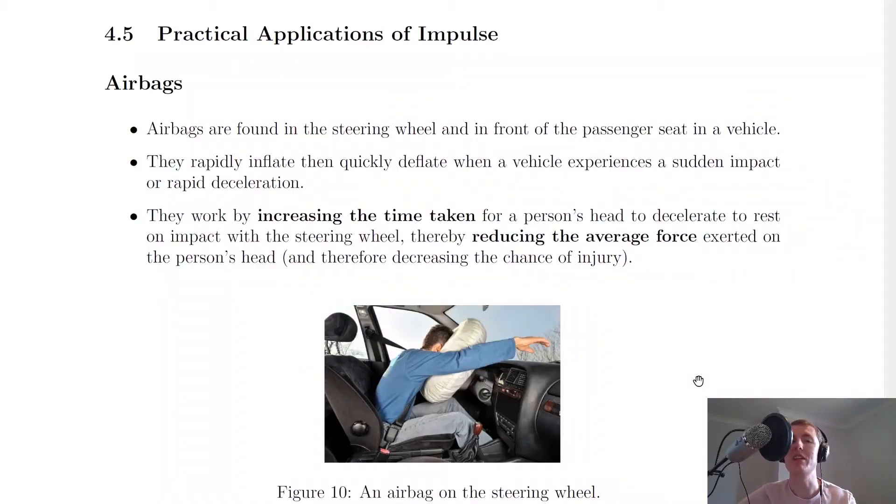We're going to look at two uses of impulse in everyday life, so that is airbags and crumple zones. But it should be noted that seat belts act in a similar way to these two safety features.